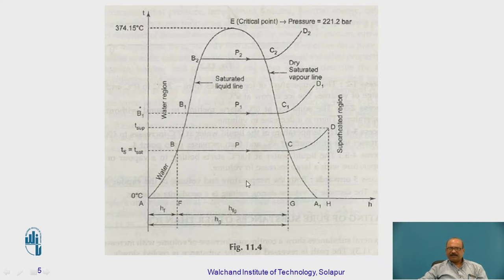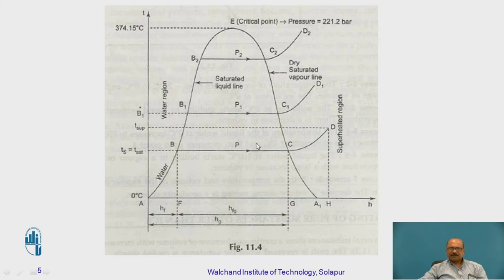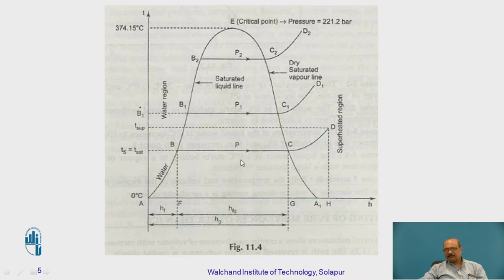We will discuss the dryness fraction in the next slide. This particular portion represents HFG and HF — these are the enthalpy of fluid and enthalpy of the fluid-gas mixture, meaning water and steam. The notation HG represents the enthalpy of gas. These notations were already explained in the equation H = Cp·dT. Based on that, we will find the values of HF, HFG, and HG. These three terms will be studied in this portion, and we will discuss what happens as pressure increases.